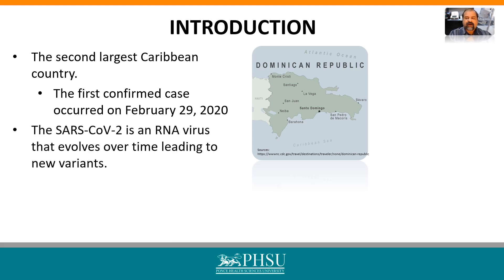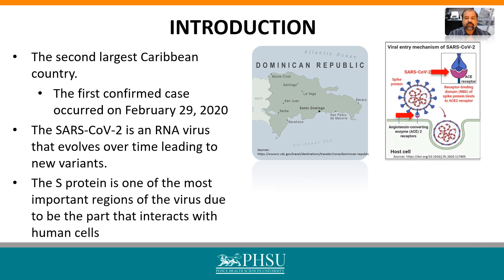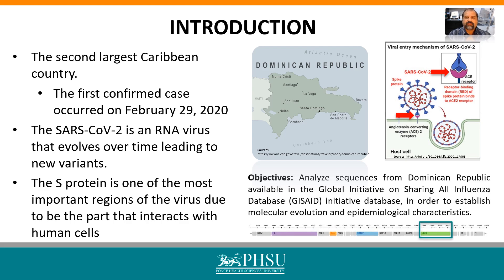The virus is an RNA virus that evolved over time, leading to new variants. The S-protein is one of the most important regions of the virus due to being the part that comes into contact with human cells. The objective of the study is to analyze sequences from the Dominican Republic available in the Global Initiative on Sharing All Influenza Data (GISAID) database, in order to establish molecular evolution and epidemiological characteristics.